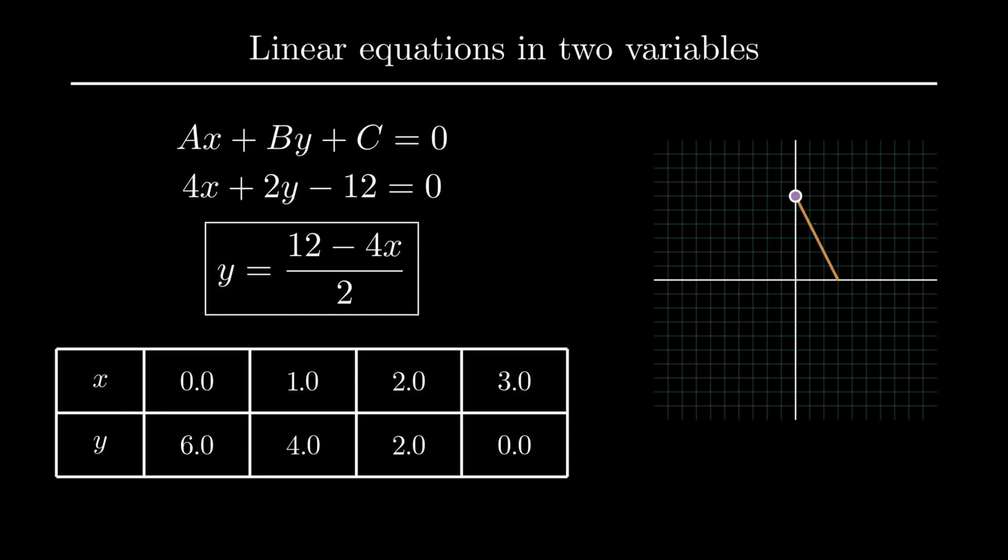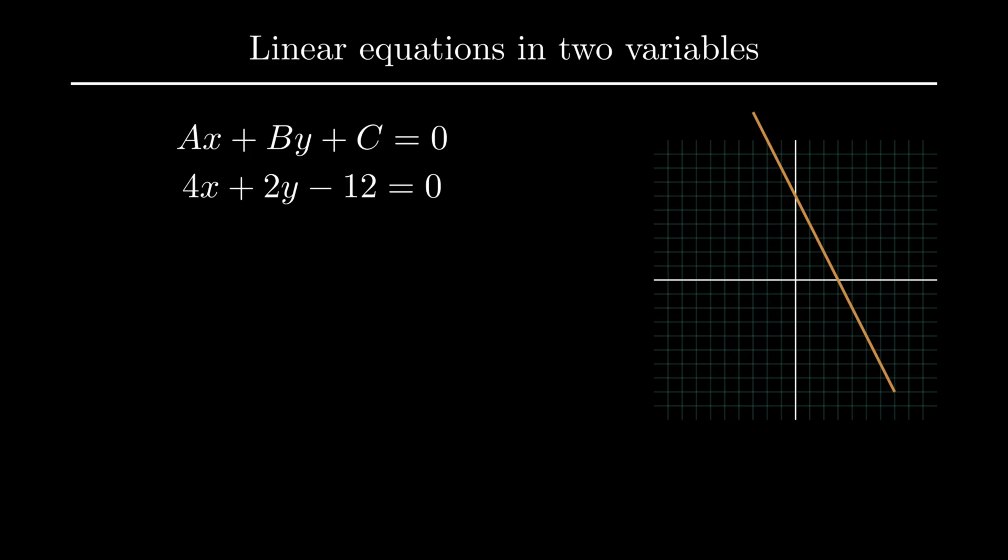On plotting these coordinates on a graph we obtain a straight line. As a line is of indefinite length and contains infinite unique points, each point on the line behaves as the solution of the given equation. Thus we conclude that a linear equation in two variables has infinitely many solutions.